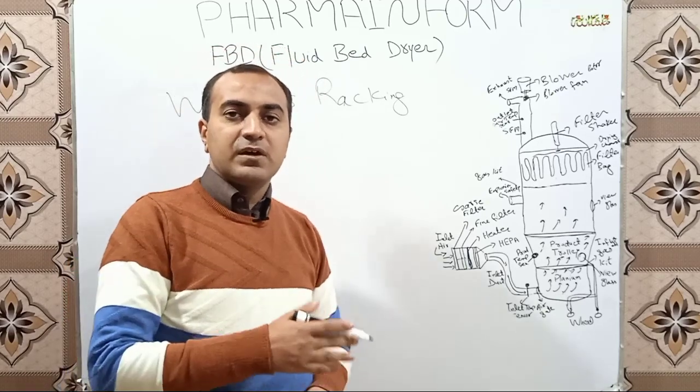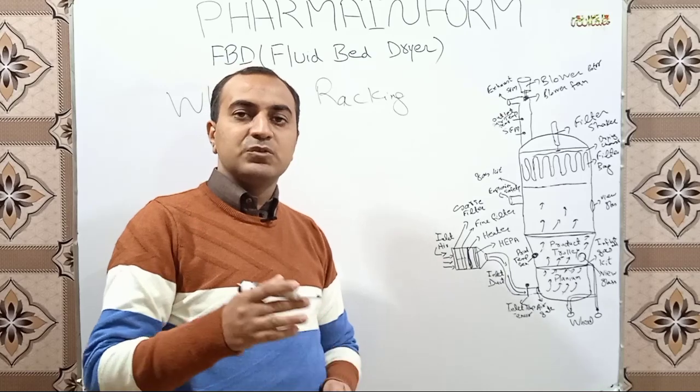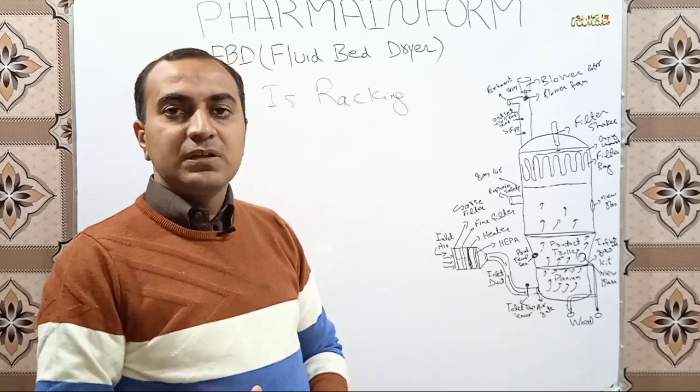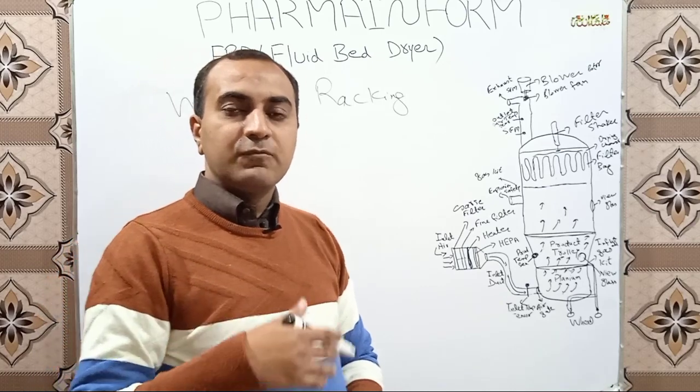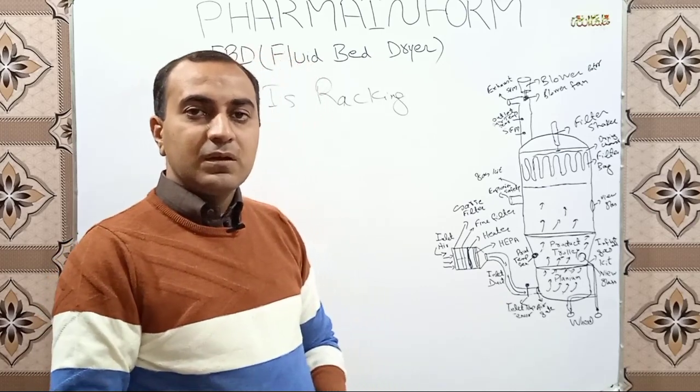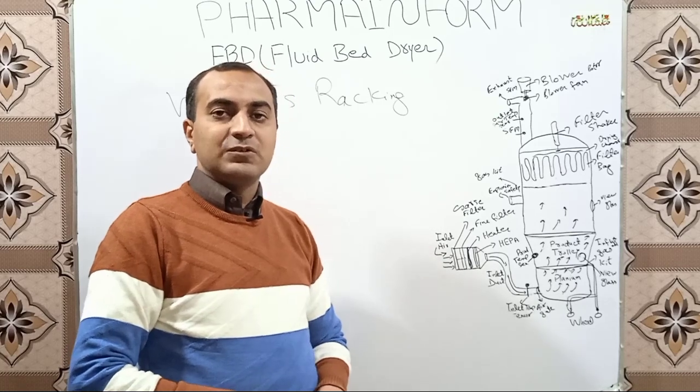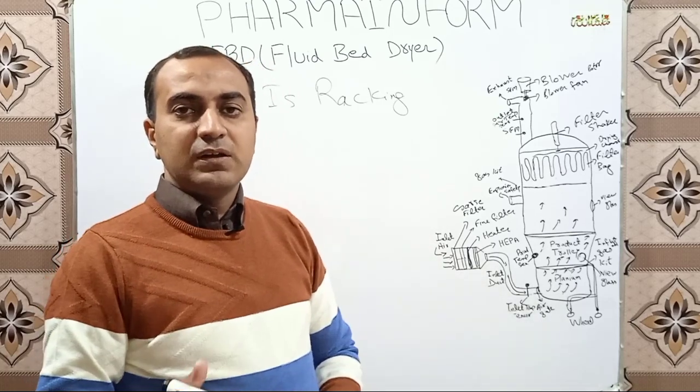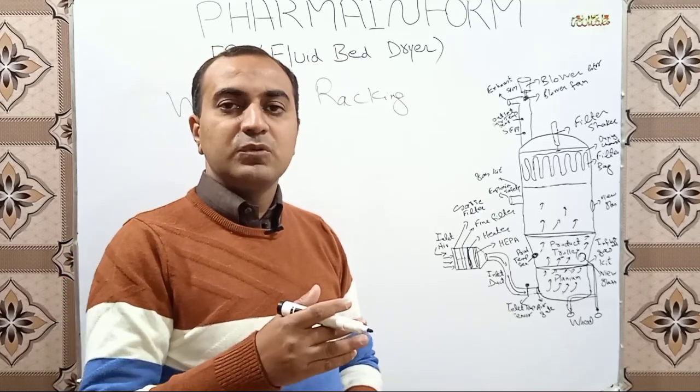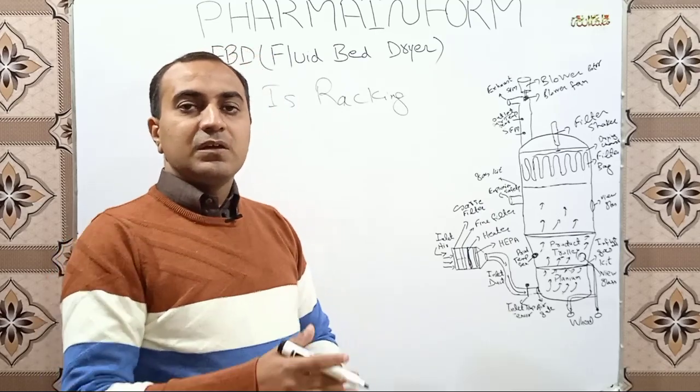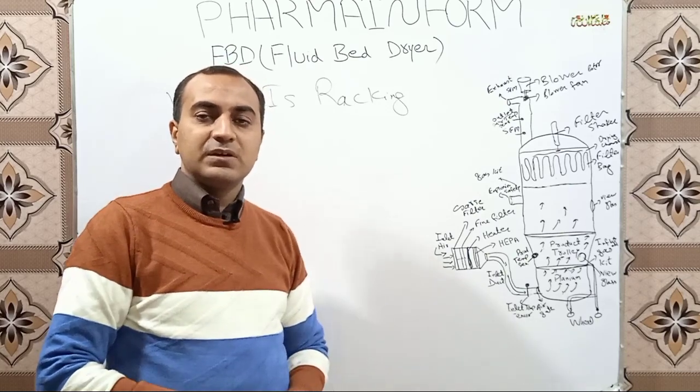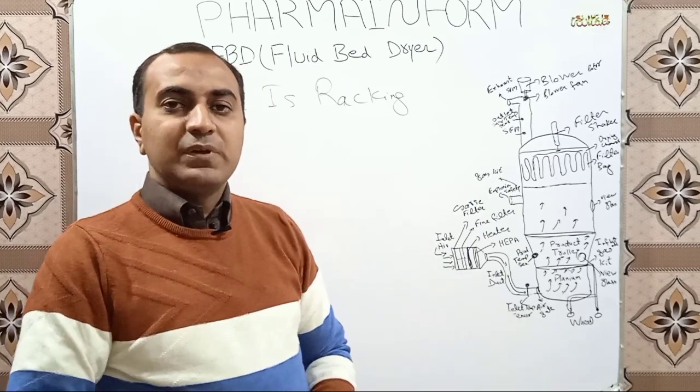So we break these large lumps manually using spatula and hand, and this helps in uniform fluidization of our product. This activity is known as wrecking. Simply, to break down the large lumps into small portions in the FBD product trolley is known as wrecking. Hope you are familiar with this term.